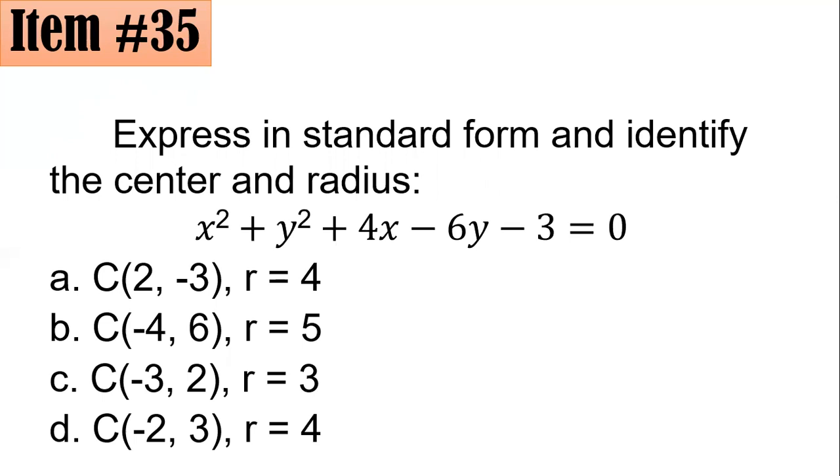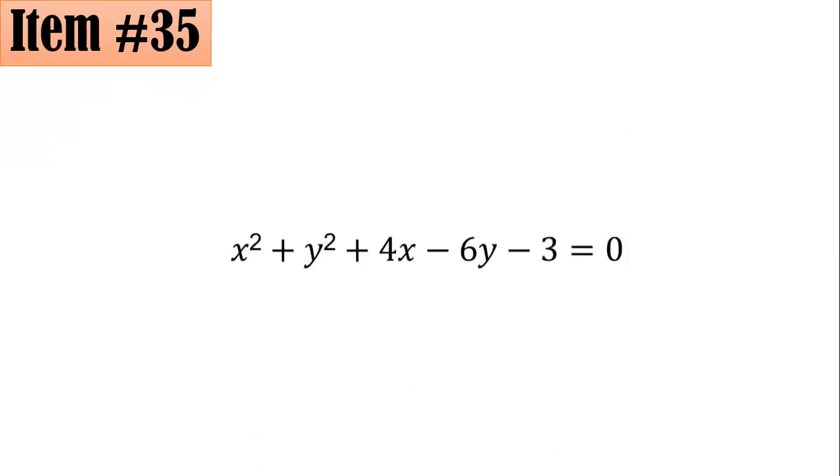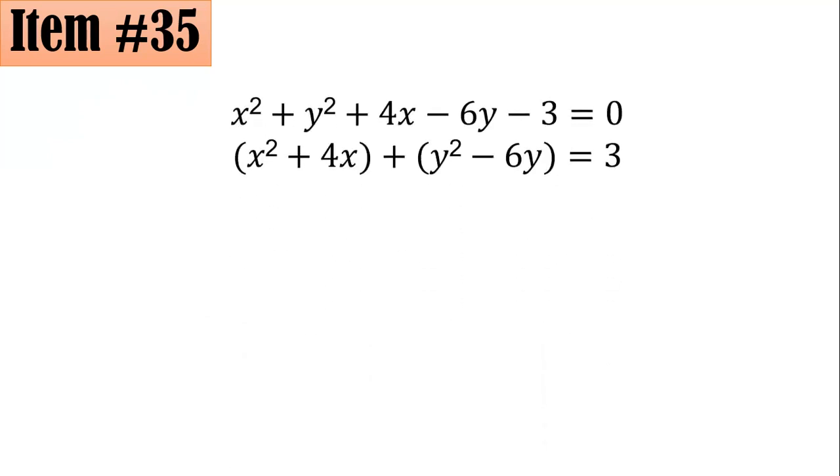Using a similar technique, grouping terms with the same variable, you have (x² + 4x) + (y² - 6y) and equate that to 3. Completing the square here, 4 divided by 2, that's 2, you square it, so you have to add 4 here.